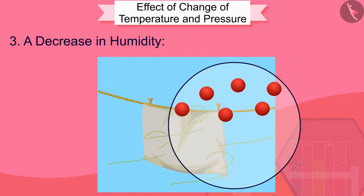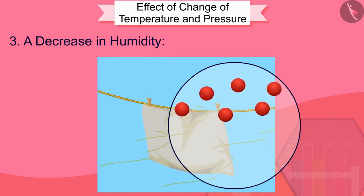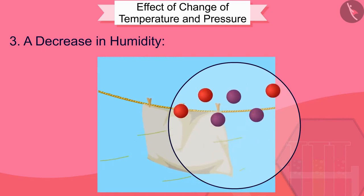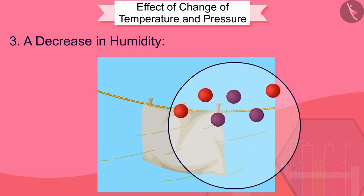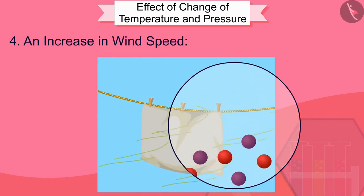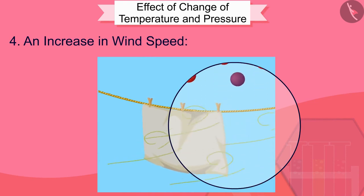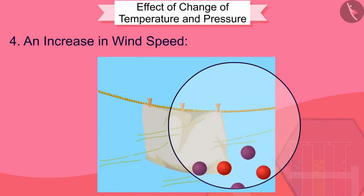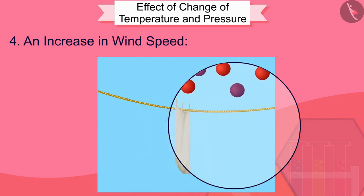Third, a decrease in humidity: humidity is the amount of water vapor present in air. The air around us cannot hold more than a definite amount of water vapor at a given temperature. If the amount of water in air is already high, the rate of evaporation decreases. Fourth, an increase in wind speed: with an increase in wind speed, the particles of water vapor move away with the wind, decreasing the amount of water vapor in the surrounding.